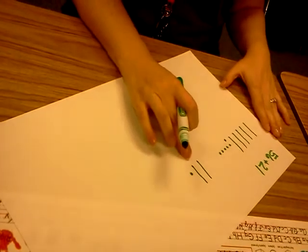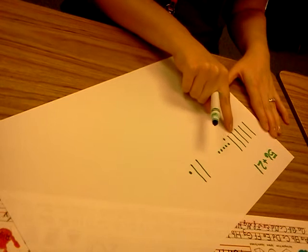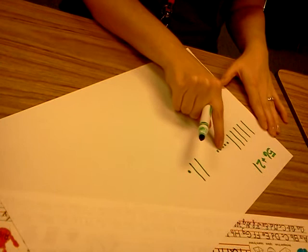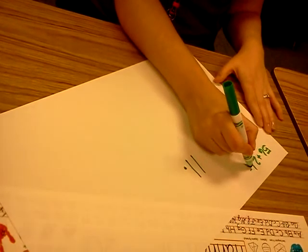Now I'm going to count all together how many tens and how many ones I have: 10, 20, 30, 40, 50, 60, 70, 71, 72, 73, 74, 75, 76, 77. So my answer is 77.